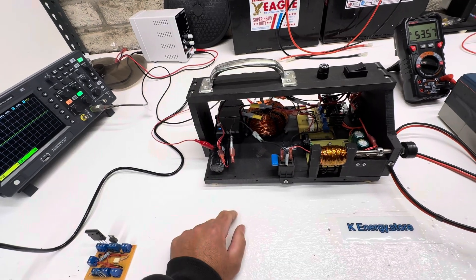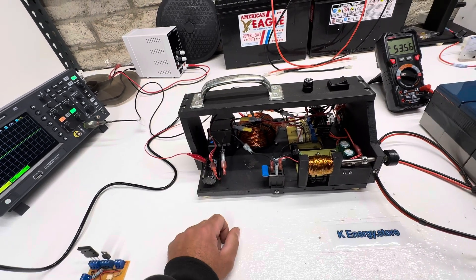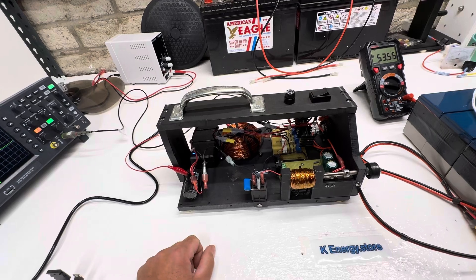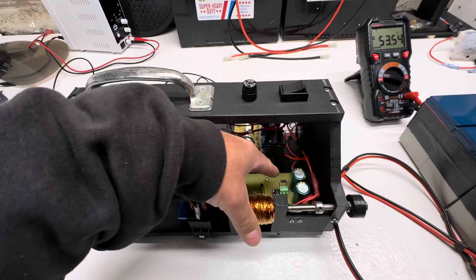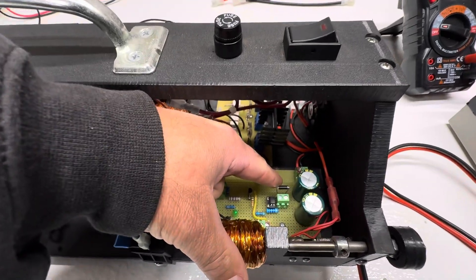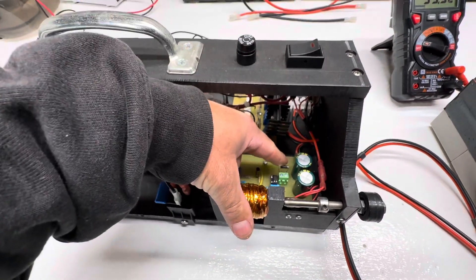You could plug in a solar panel right here, a 12-volt solar panel, and then the oscillator boosts the voltage up. It's really neat. It has a simple zener trigger right here.